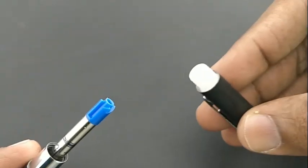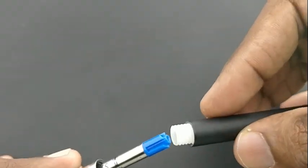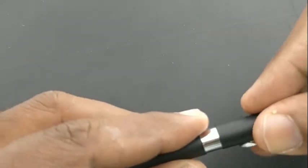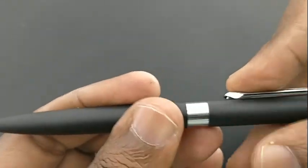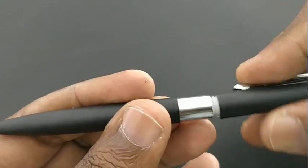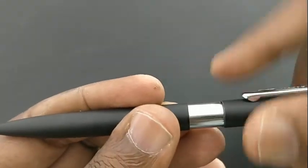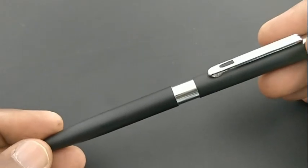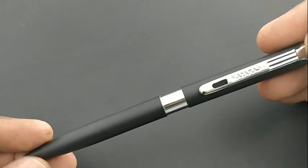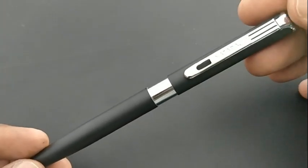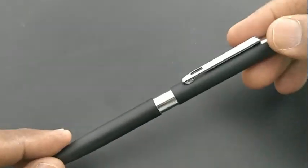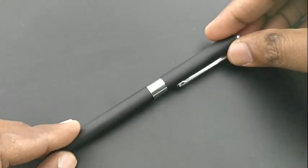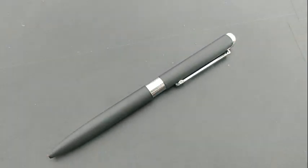This pen will be suitable for students and even officials too for gifting purpose. Comes with 0.7 mm tip and the pack says smudging issues are controlled by Nataraj so that students who write many pages will be happy to have a pen which is not having much smudge.